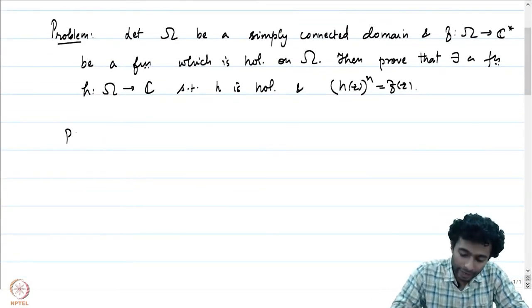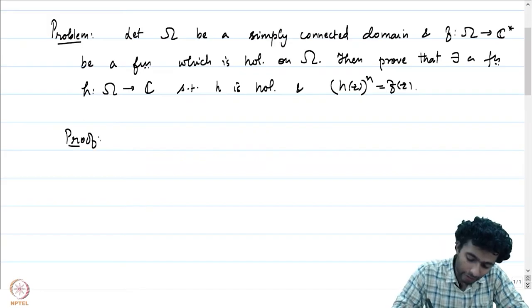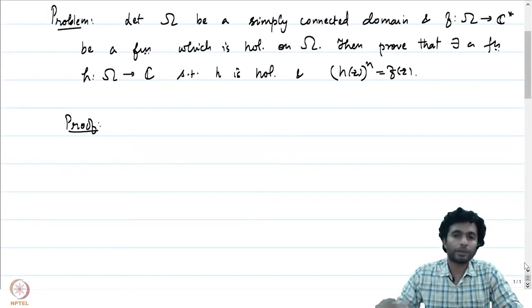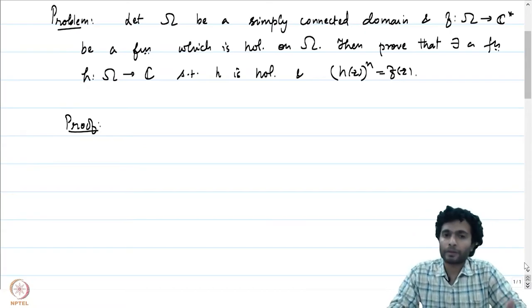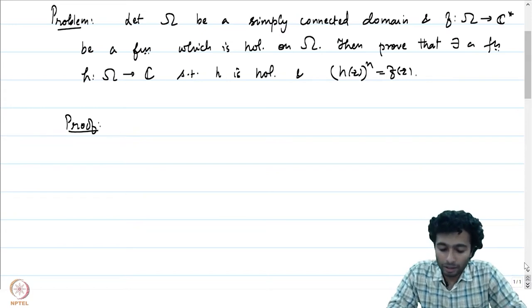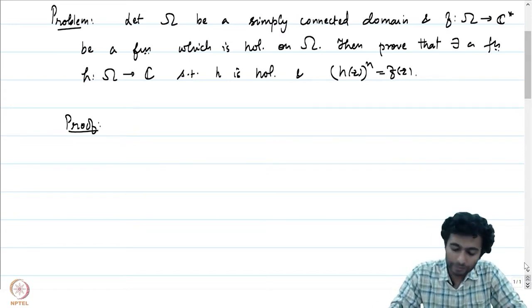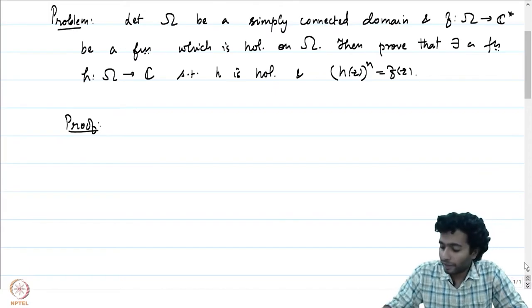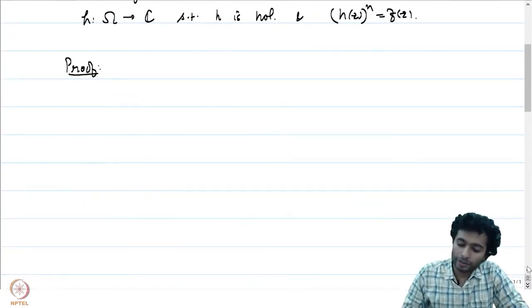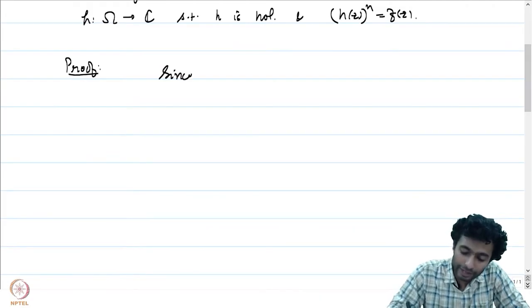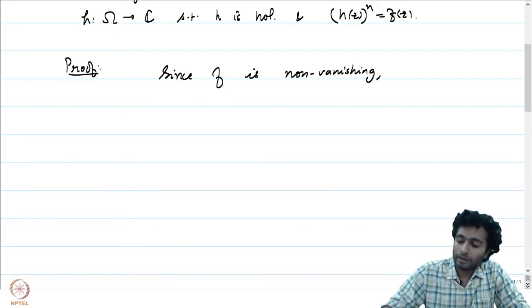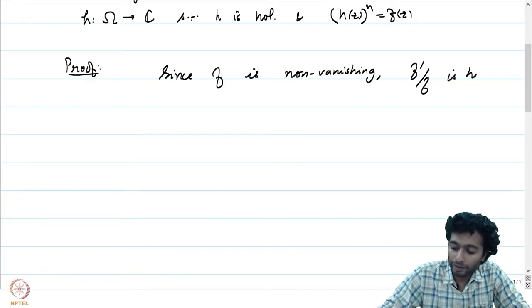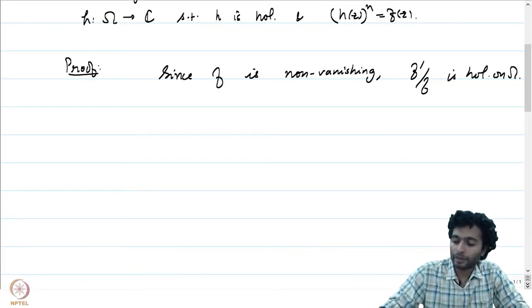Let us give a proof of this. We have seen most of this proof already, but it is good to recall now that we understand the holomorphic branch of the complex logarithm. The first observation is that since f is non-vanishing — because f takes values in C* — f'/f is holomorphic on omega.